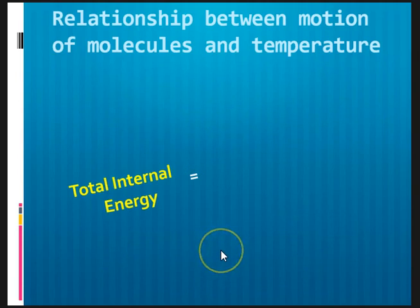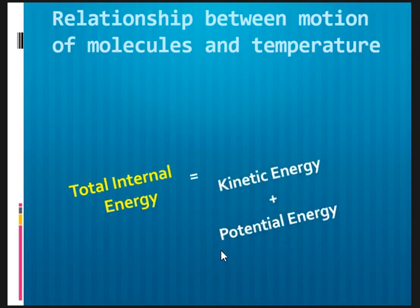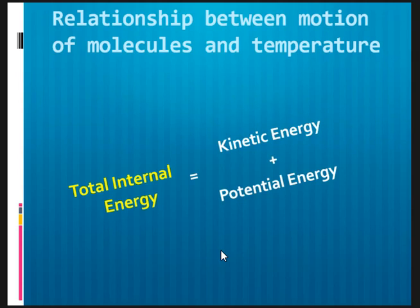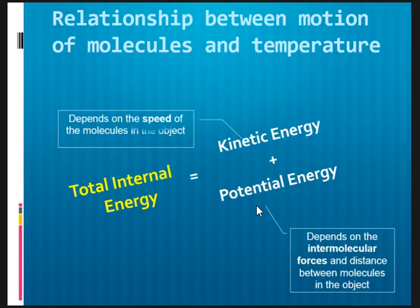By now, you would have figured out that objects contain some internal energy. It is time to introduce to you that this internal energy is made up of two types of energy. First, it is kinetic and the other one is the potential energy. Kinetic energy of molecule depends on the speed of these molecules, while the potential energy of the molecule depends on the intermolecular forces of attraction and also the distance between the molecules in the object.